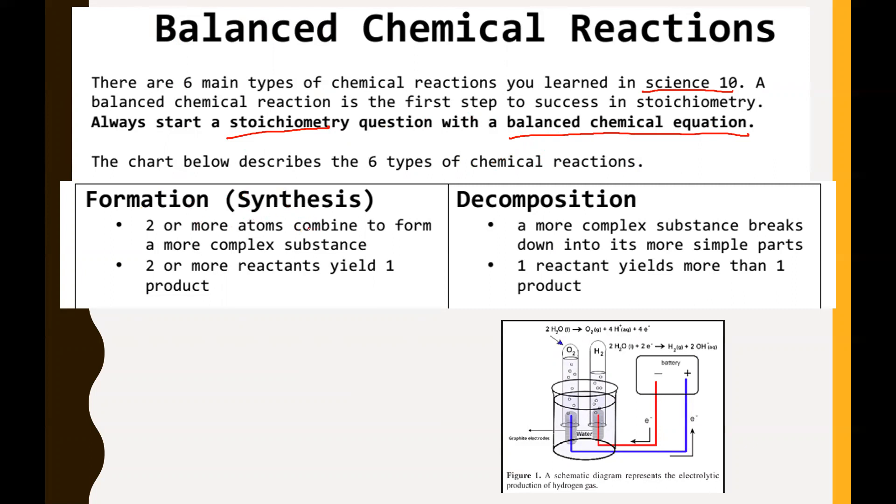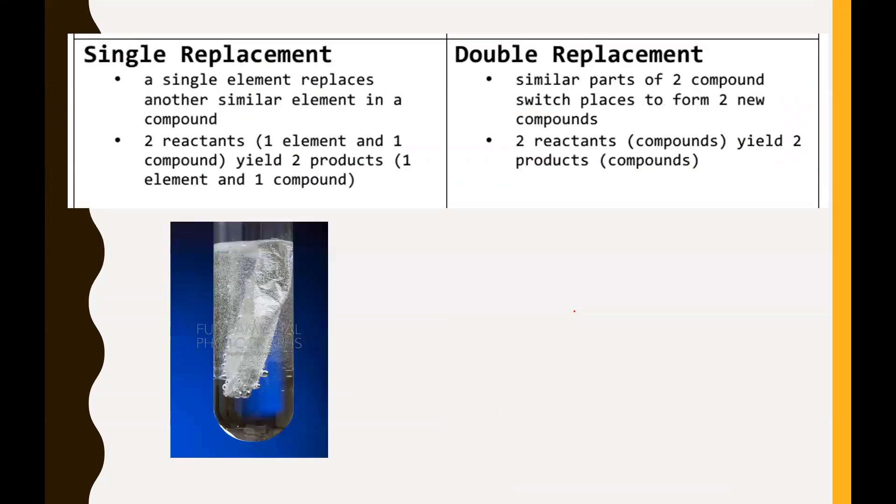The chart below describes the six types of chemical reactions. This of course is in page two in your booklet that I gave you. The first type of reaction is a formation, also known as a synthesis reaction. This is where two or more atoms combine to form a more complex substance. So in other words, you can have two or more reactants yielding just one product. Then the other type is a decomposition. This is basically the same thing as a formation just in reverse. So this is where you have a more complex substance, it's breaking into its more simple parts. So in other words, one reactant will yield more than one product.